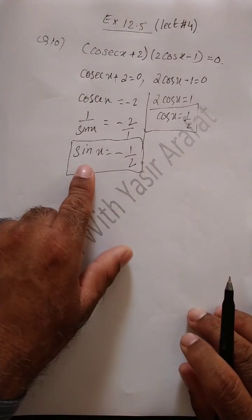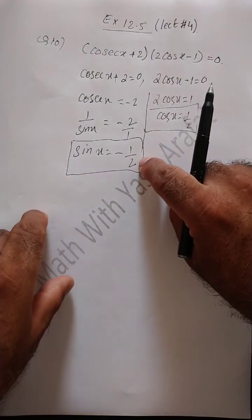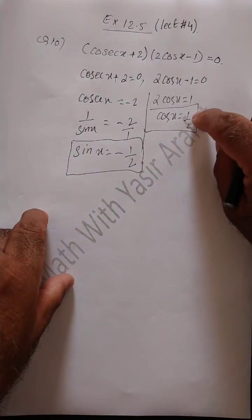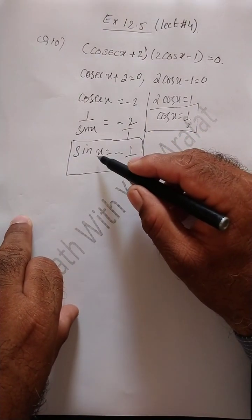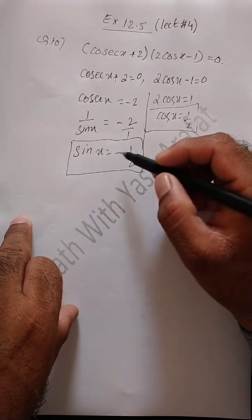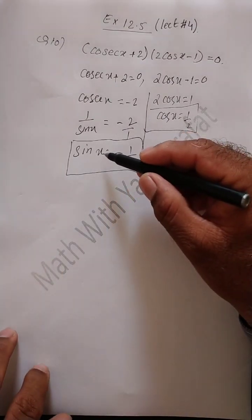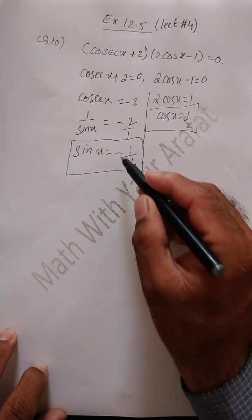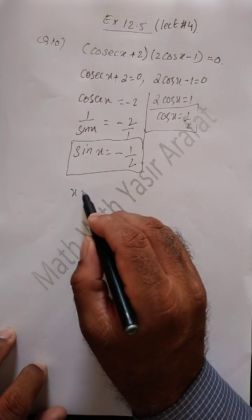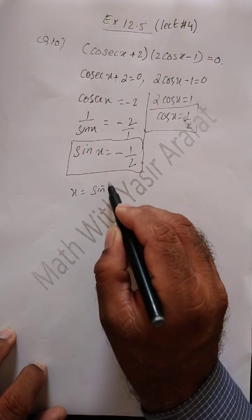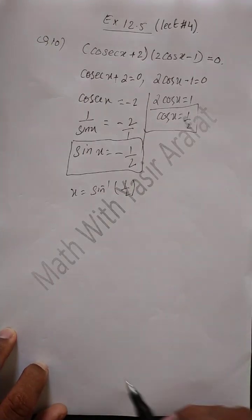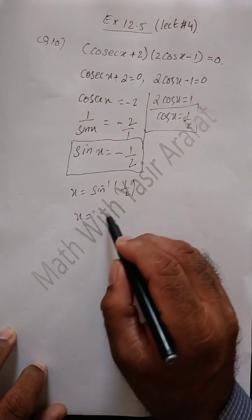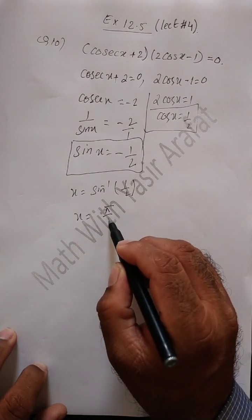First we will work with sin x = minus 1/2, then with cos x = 1/2. The negative sign tells us in which quadrant the function lies. When finding the reference angle, we do not use this negative sign. So x = sin inverse (1/2), which gives us 30 degrees, that is pi upon 6.